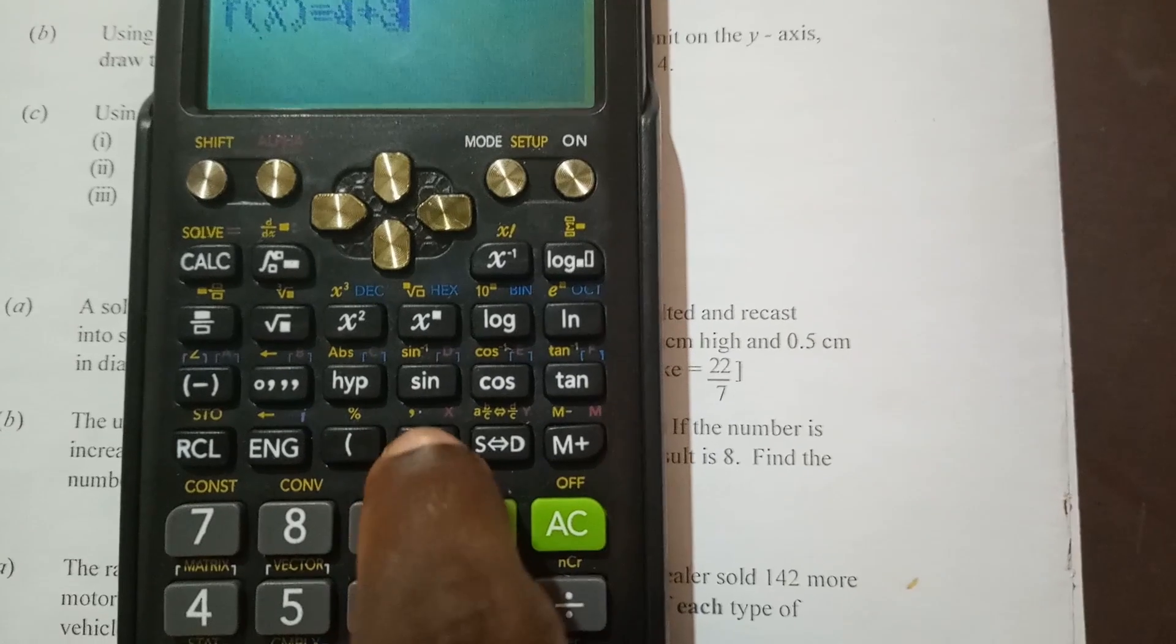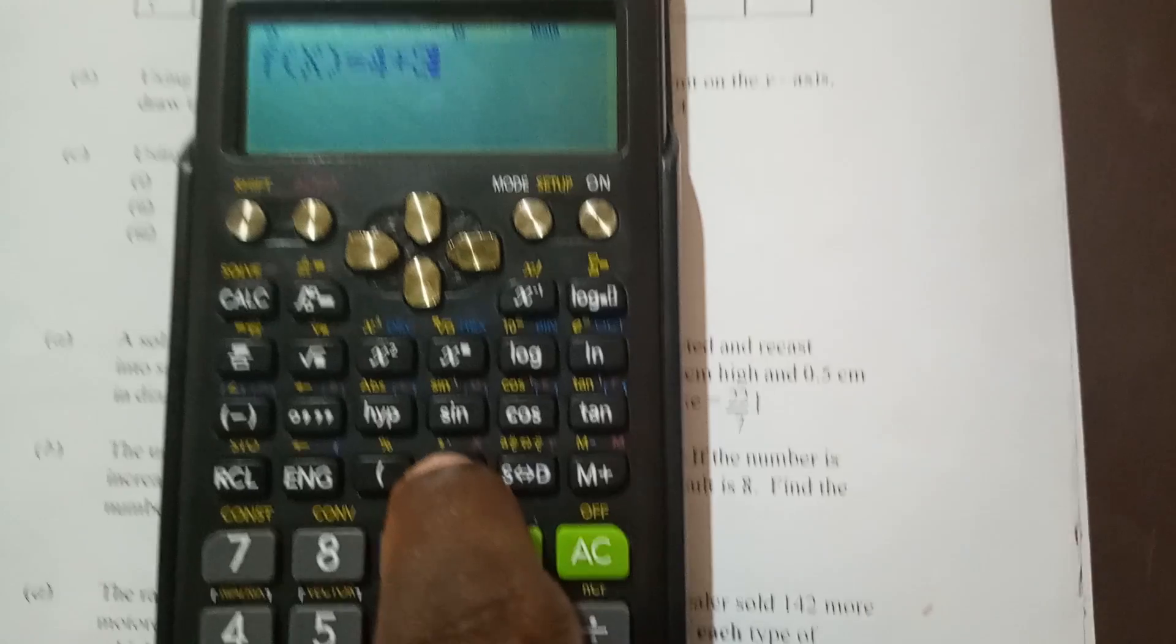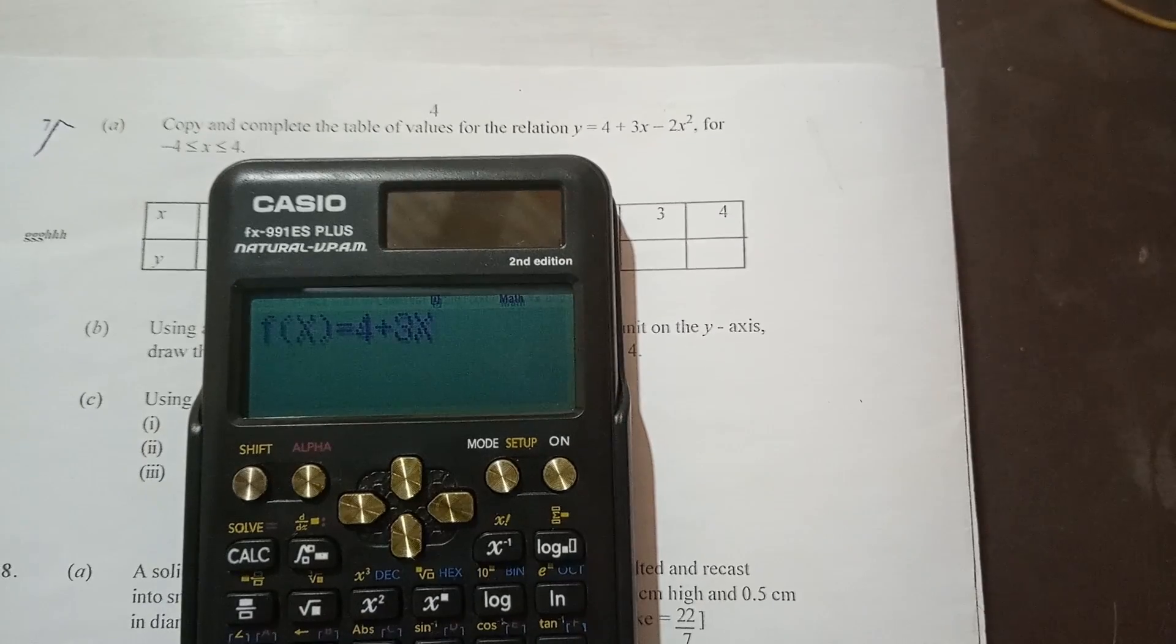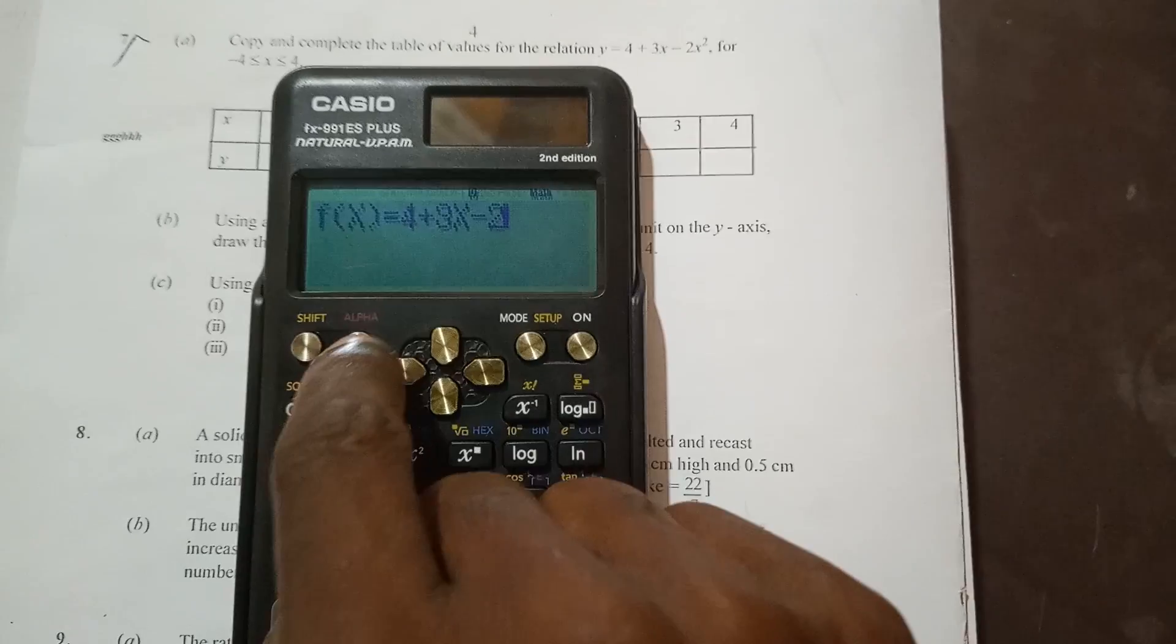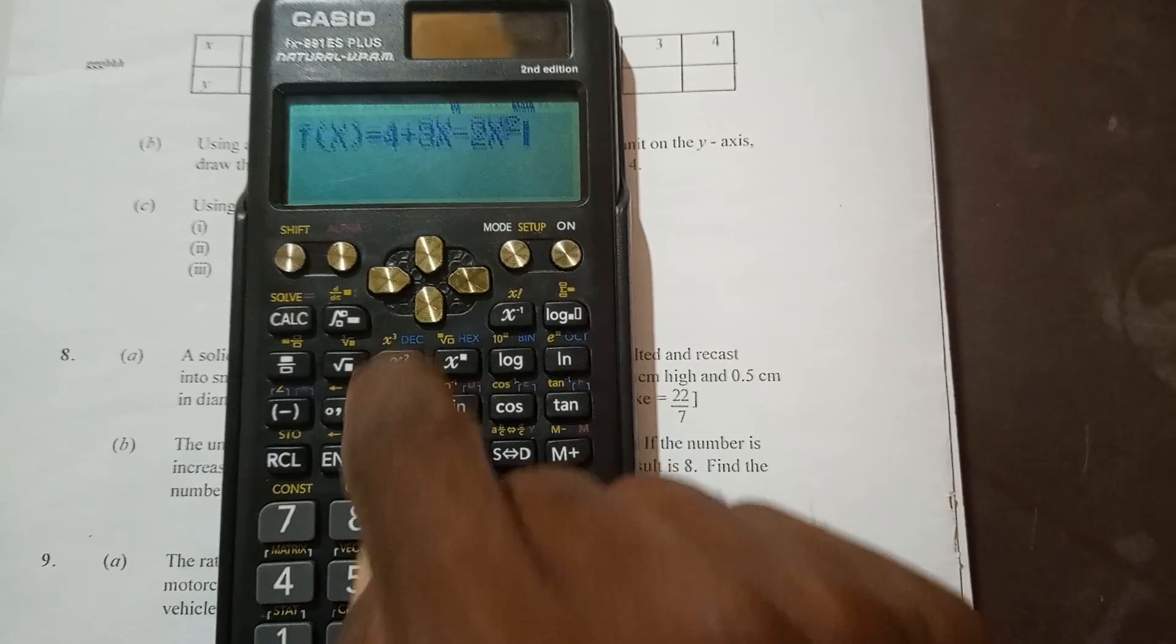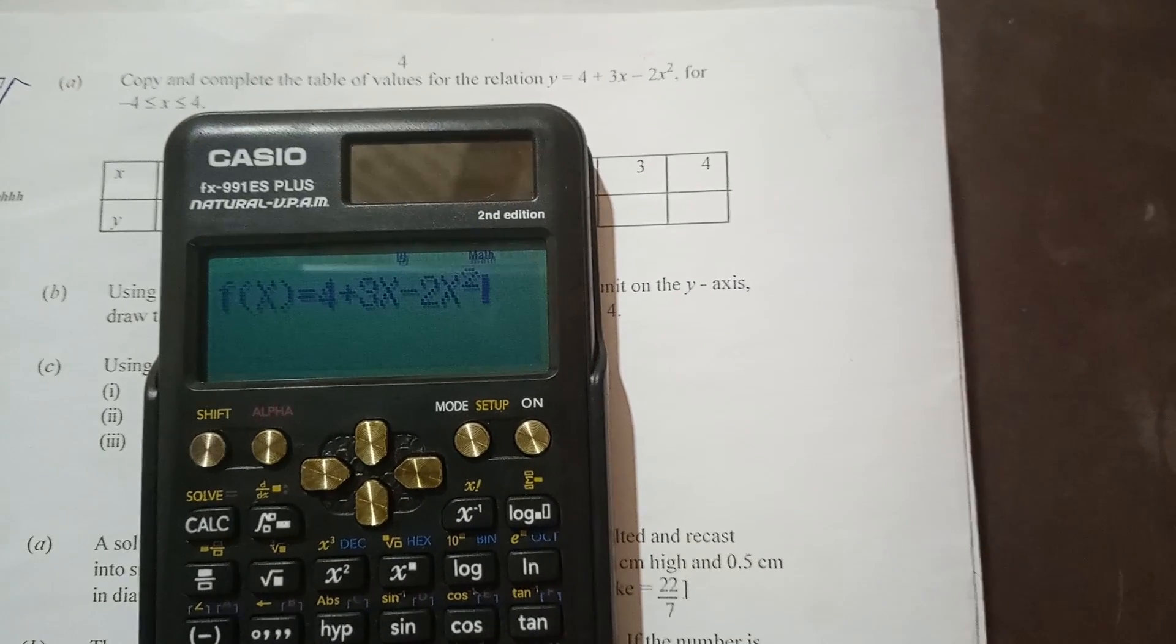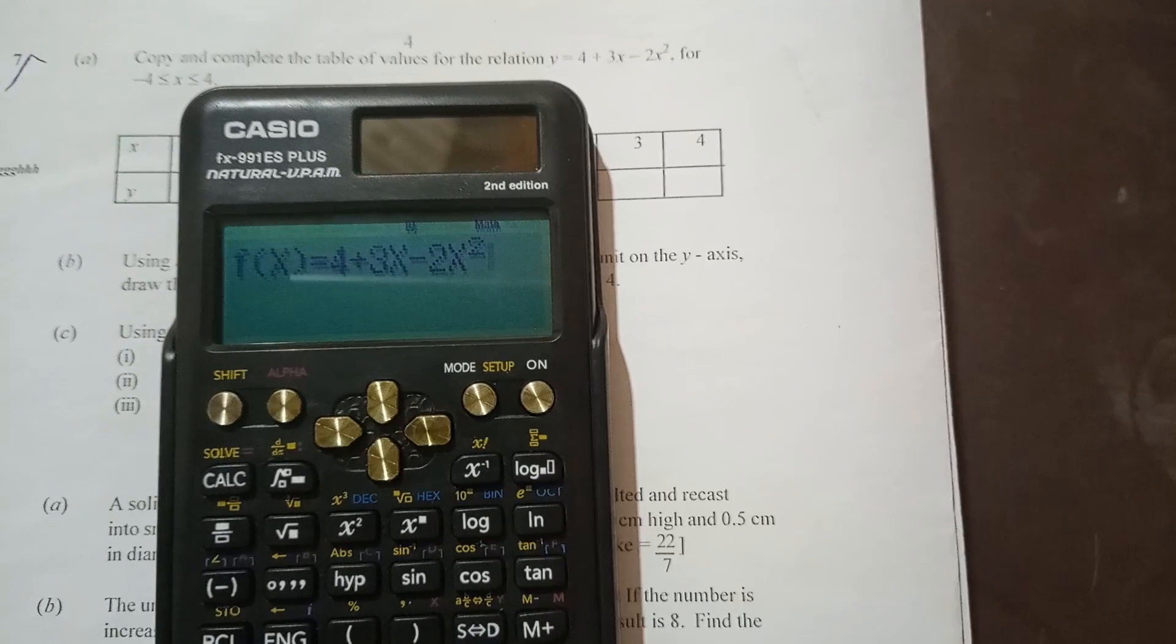Any writing in pink means you need to press the alpha for it to function. So I press alpha. You see that x has come. Then minus 2x squared. So minus 2, alpha x, which is the closing parenthesis. Then I press squared. Your function must look exactly like the way it is in the question: 4 plus 3x minus 2x squared.